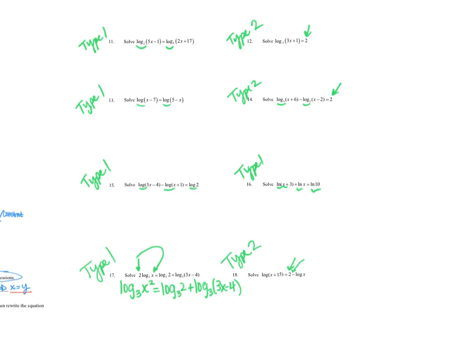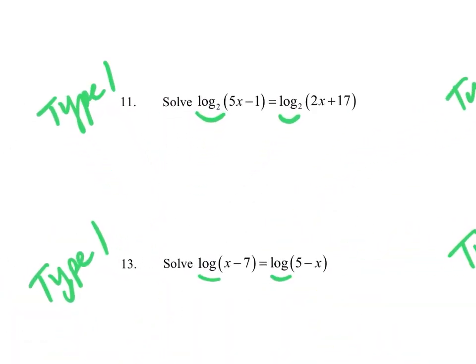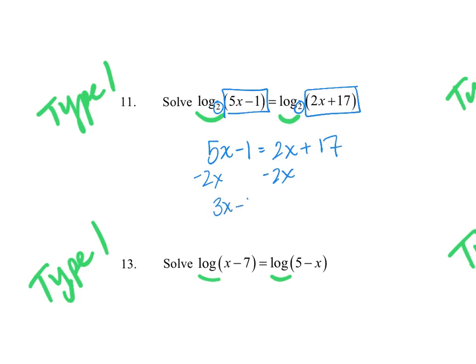Once we know the type, we know what to do. For Type 1, our job is to get it into the form log of something equals log of something. Starting with question 11, it's already set up that way with matching bases, so we know 5x minus 1 has to equal 2x plus 17. Solving: subtract 2x from both sides to get 3x minus 1 equals 17, then add 1 to get 3x equals 18, so x equals 6.